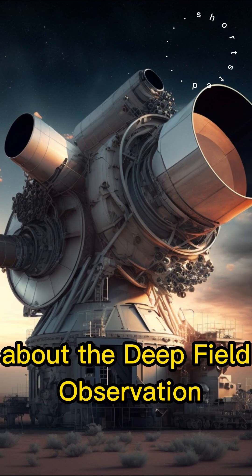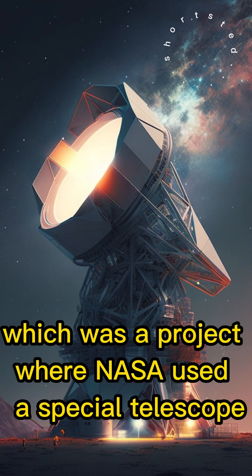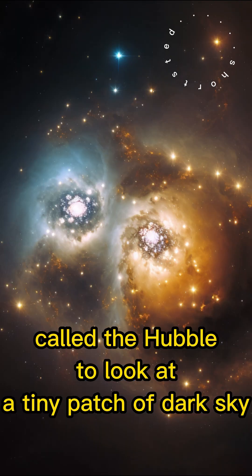Dr. David Eagleman talked about the Deep Field Observation, which was a project where NASA used a special telescope called the Hubble to look at a tiny patch of dark sky.